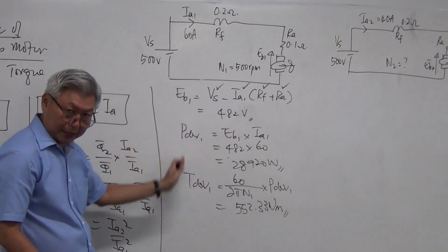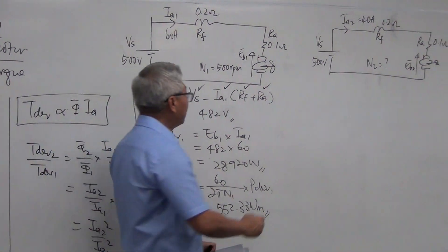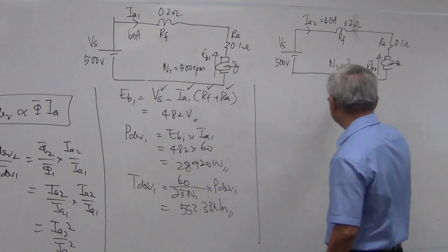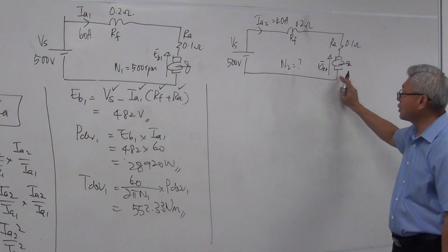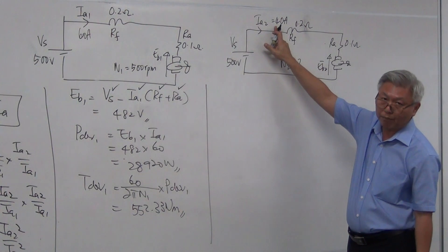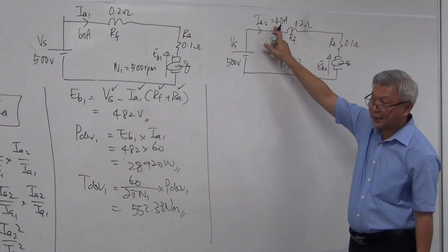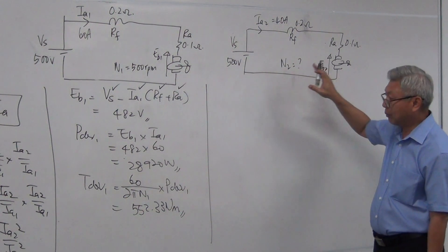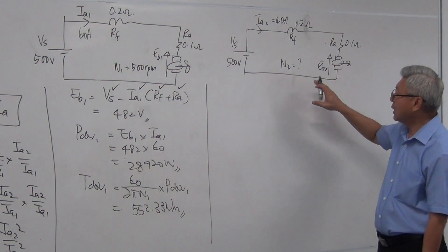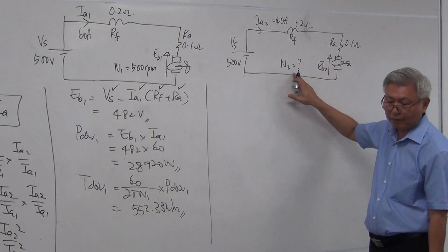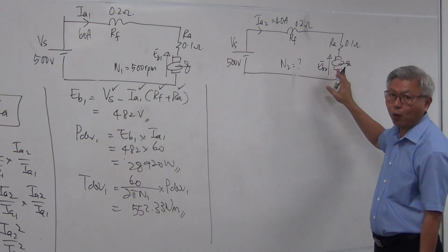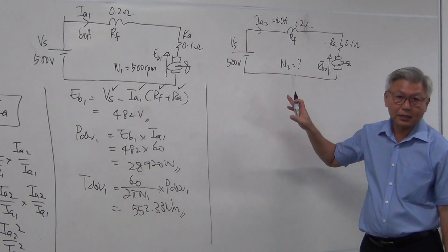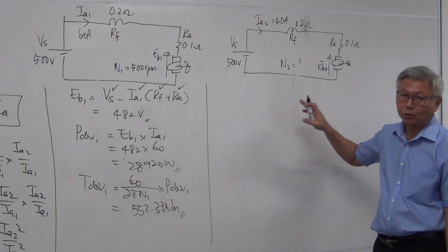So this is my first situation. Now you move on, then my torque changes. And the torque changes in such a way that it draws 40 amperes, 40 amperes, lesser current. So therefore the torque is lesser. So let's find out the new speed. Now for shunt motor, we realize that with the different torque, the speed stays rather constant, but not for series motor. Let's find out.